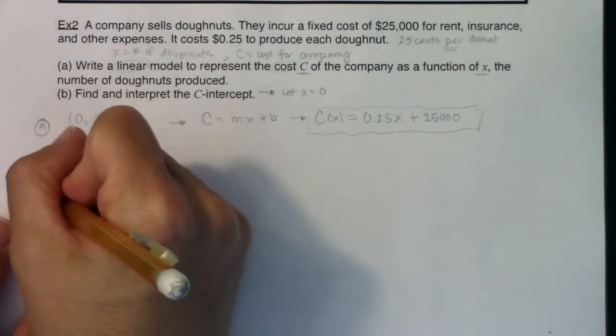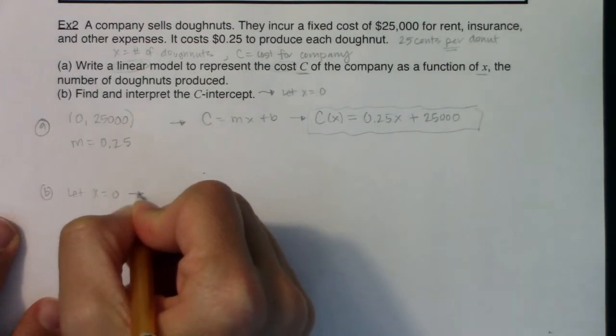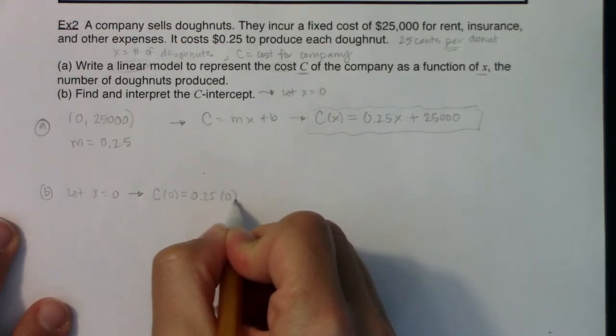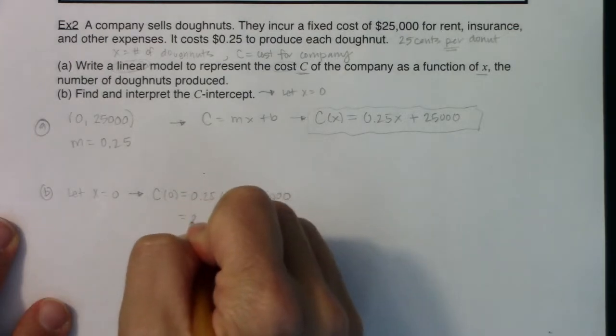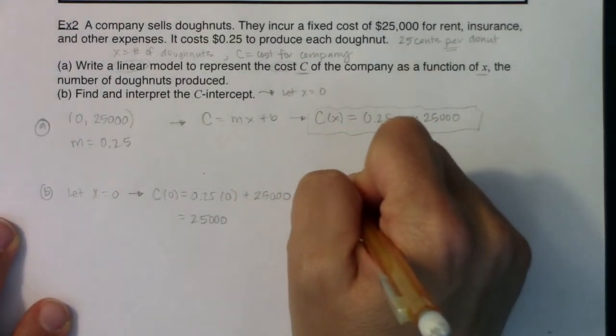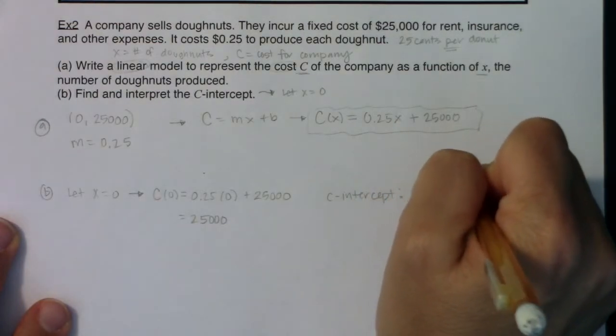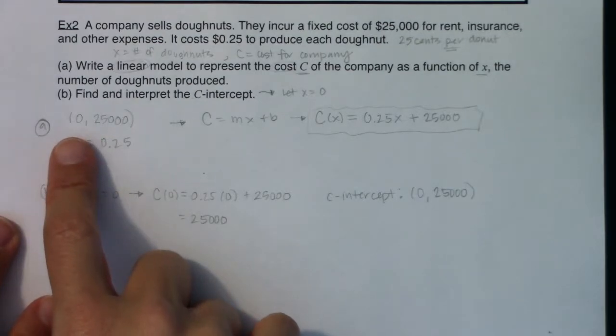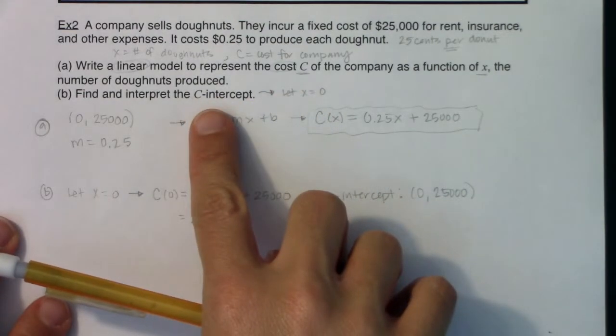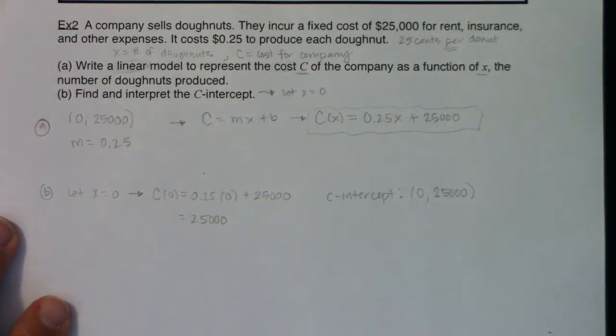So for part b, I'm going to let x equal 0. If I do that, C(0) is equal to 0.25 times 0 plus 25,000, which in and of itself is equal to 25,000. So our C-intercept is the ordered pair (0, 25000). And again, some of you might have spotted it right away. I mean, we were given the C-intercept. But if you didn't see that, if you didn't notice that, that's fine. Anytime you want to find a C-intercept, you let x equal 0, or anytime you want a certain intercept, let the other letter zero out.